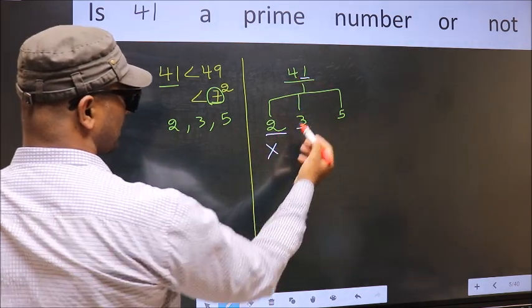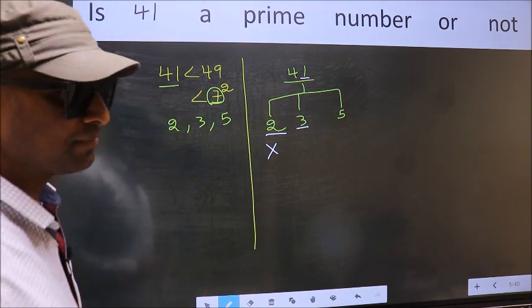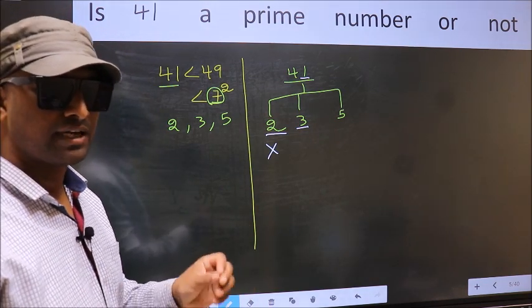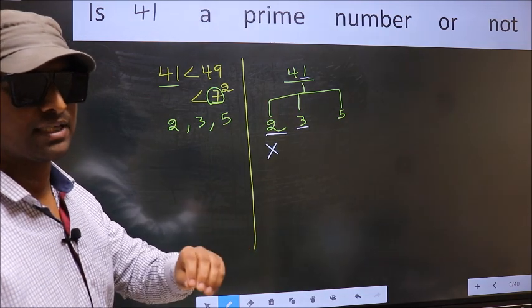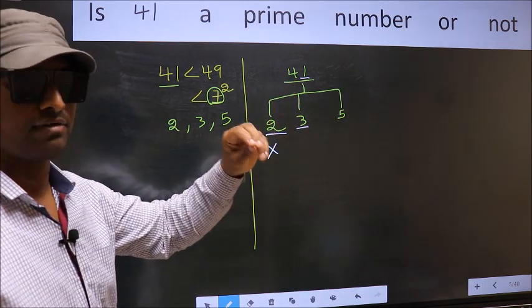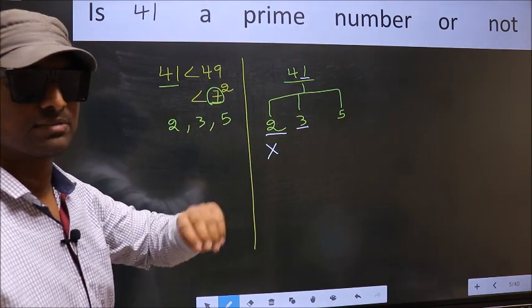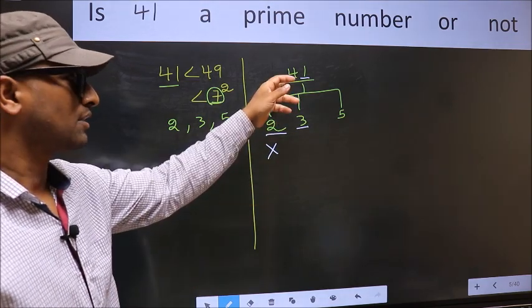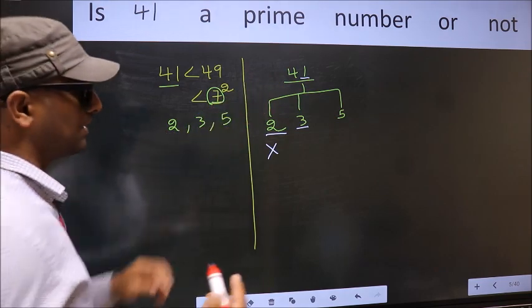Next number 3. To check divisibility by 3, for that we should add the digits. What I mean is, 4 plus 1, we get 5. And 5 is not divisible by 3, so this number also not divisible by 3.